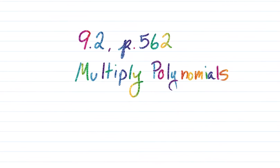In this video, I will be discussing section 9.2, which begins on page 562 of your textbook, and it covers multiplying polynomials. So just like with adding and subtracting polynomials, we can set up these problems either vertically or horizontally. So let's just go ahead and look at a ton of examples.